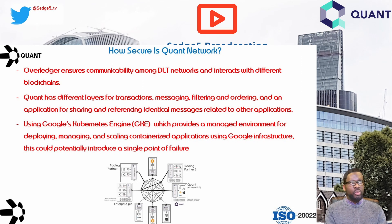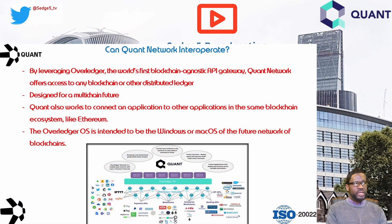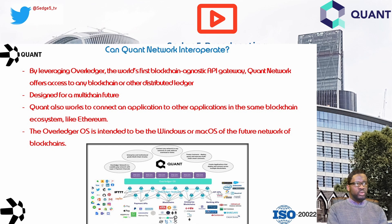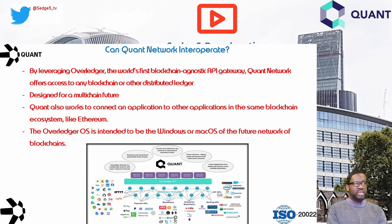Does Quant Network interoperate? By leveraging Overledger, the world's first blockchain-agnostic API gateway, Quant Network offers access to any blockchain or distributed ledger. It simplifies connections to all the private and public blockchains one might need — in other words, it is designed for a multi-chain future. Quant also connects applications to other applications in the same blockchain ecosystem, like Ethereum. The Overledger operating system is intended to be the Windows or Mac OS of the future network of blockchains.